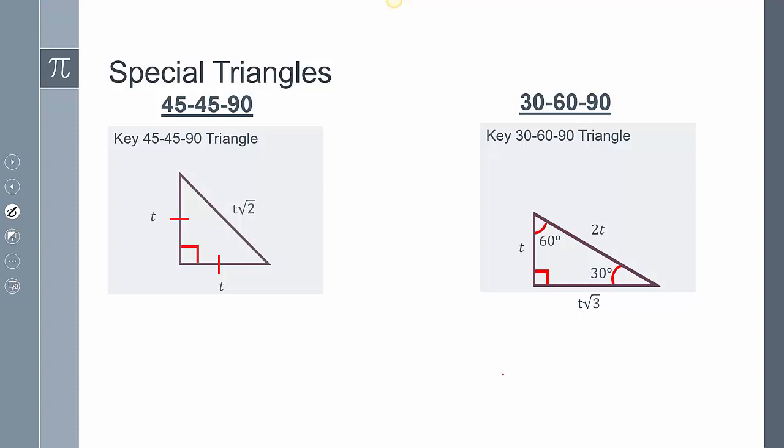Now these are the two special triangles that I was talking about. We have a 45, 45, 90 and a 30, 60, 90 triangle. These triangles have a ratio where for the 45, 45, 90, my two legs are equal, and whatever my leg is times root 2 is my hypotenuse. So if my t is 5, this would be 5, this would be 5, this would be 5 root 2.